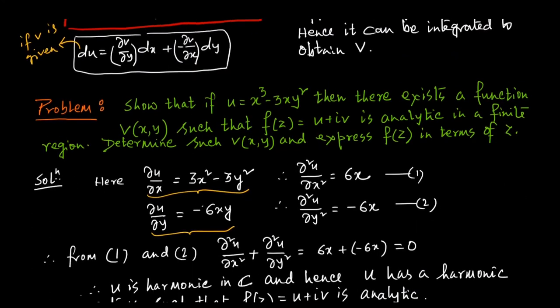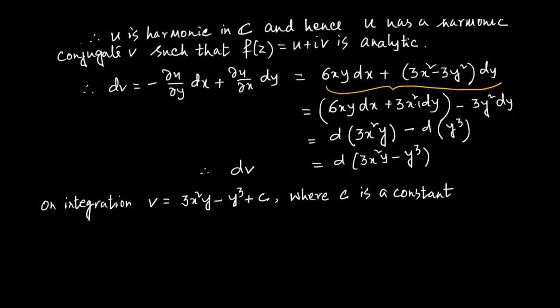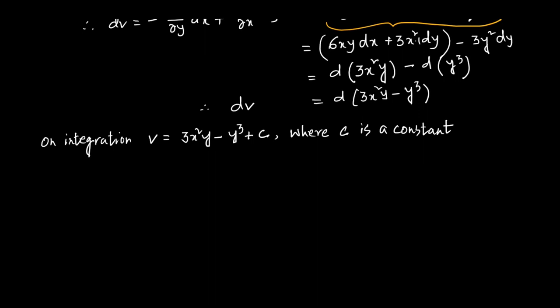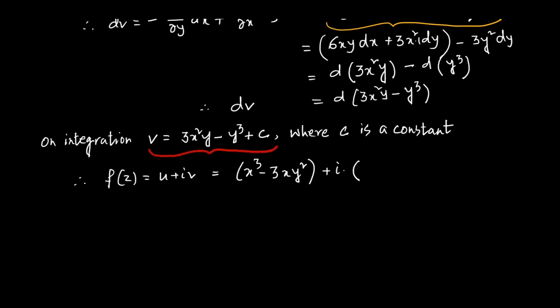Now the third part: we need to find f(z) and express it in terms of z. So f(z) equals u plus iv equals (x³ minus 3xy²) plus i(3x²y minus y³ plus c). We need to represent f(z) as a function of z equals x plus iy, so we need to adjust the expression so it can be written as a function of (x + iy).